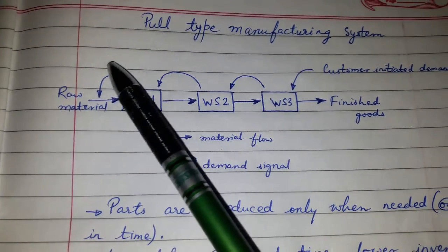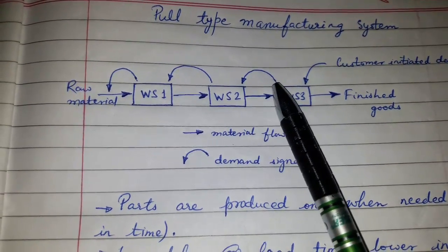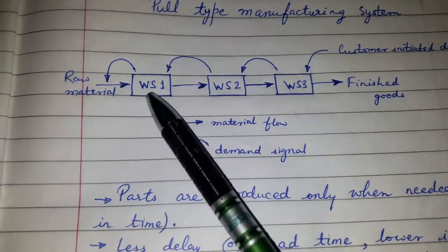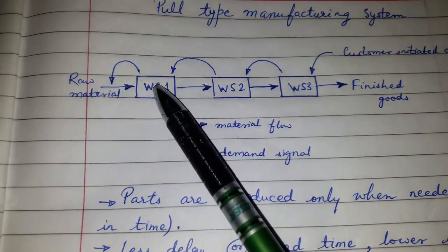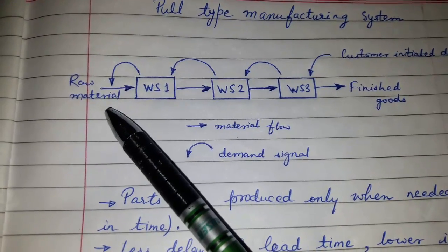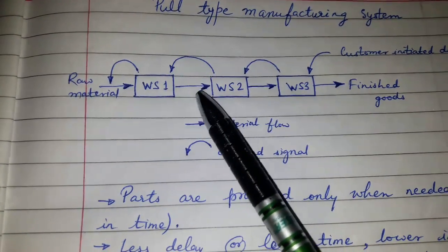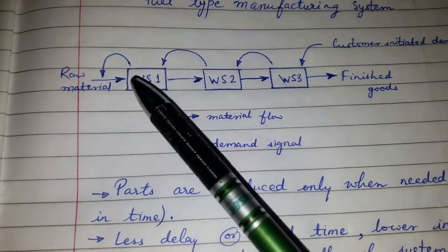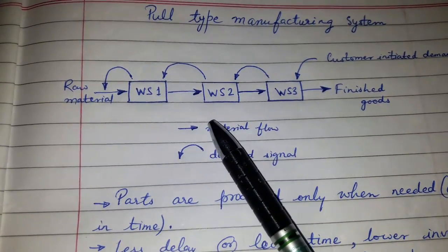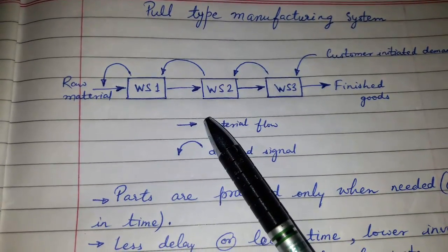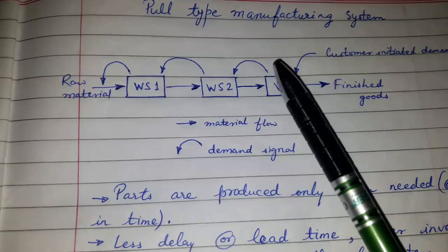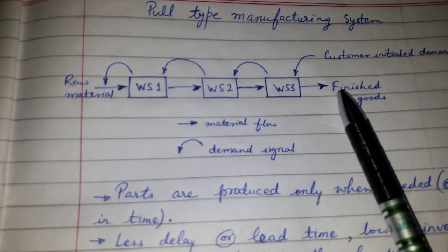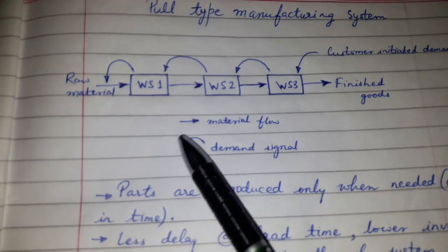The demand signal goes to the previous machine or the previous workstation, then to the previous workstation before that, all the way back to the raw material. This arrow shows the material flow, and this arrow shows the demand signal. So the demand for the finished good which is generated leads to the manufacturing of the component.